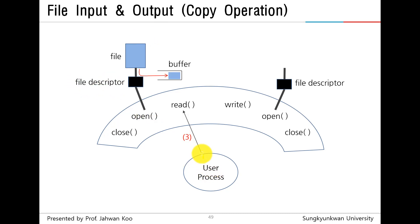Next, user process calls read function to read data from the open file. The data is transferred to the buffer. Next, user process calls write function in order to write data in the buffer to the other open file. At this point, the open file will be created. Finally, user process calls close function to close the files.